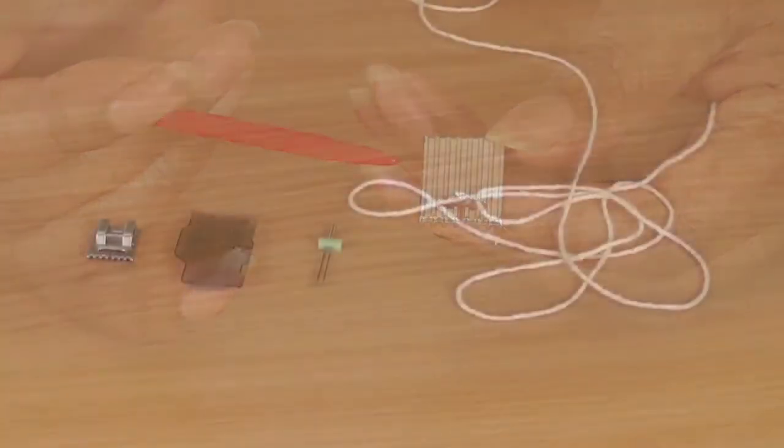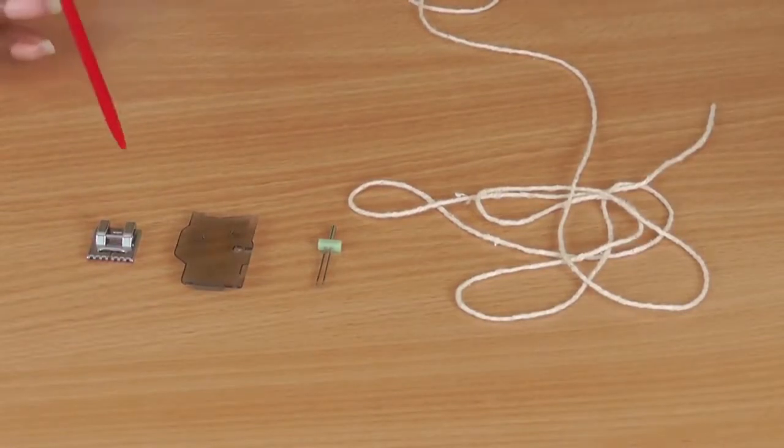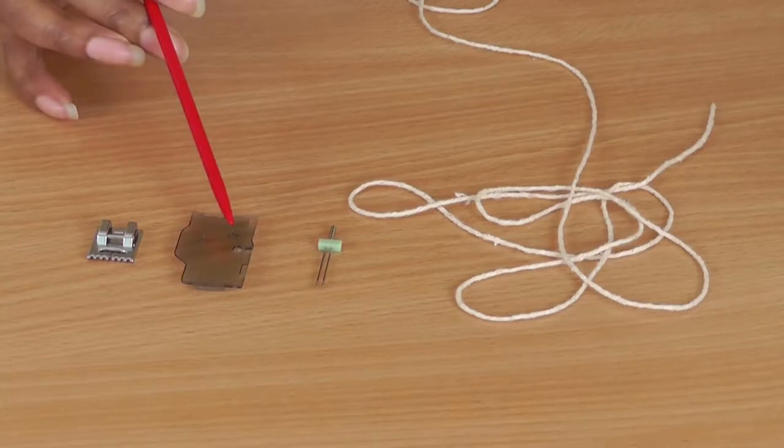What you're going to need to create these pin tucks - and they are structured pin tucks, I'll explain about that later on - obviously you're going to need your pin tuck foot. You've got a special cover here that enables you to thread the cord into, which is the bobbin cover, and you're going to need twin needles and cording.